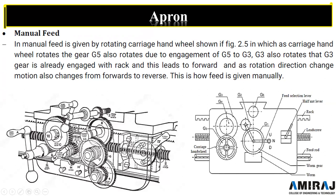There is one G5 gear inside — you can see. That will transfer the motion to G3, and G3 rotates G4. G3 is also engaged with the rack, and this leads to forward rotation direction. The motion can also change from forward to reverse. This is how the feed is manually given. Here you can see the rack, which is mounted on G3, and it engages with the rack to produce forward and reverse motion.